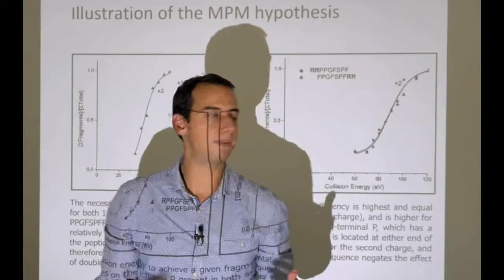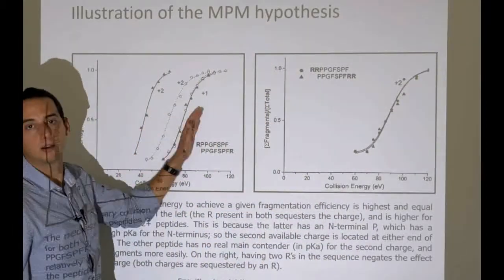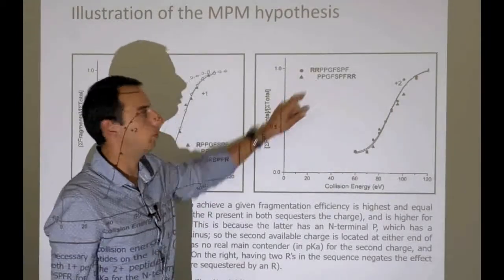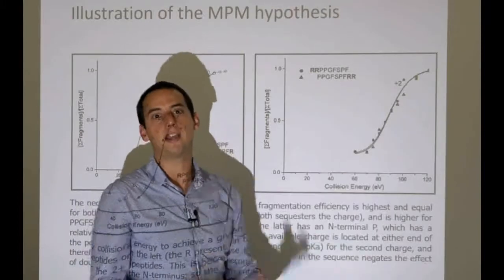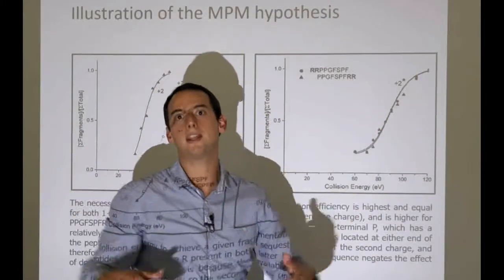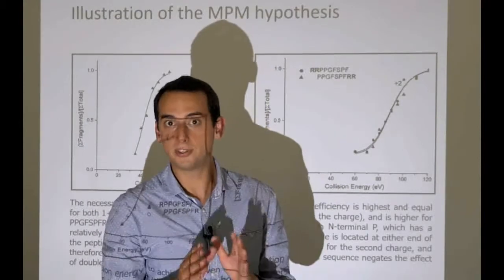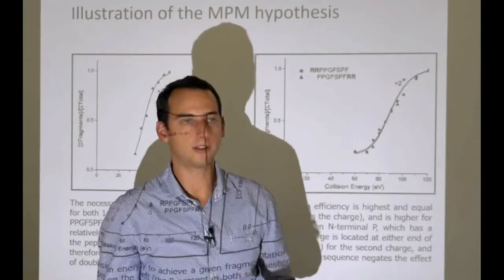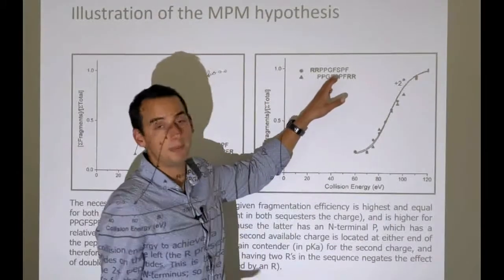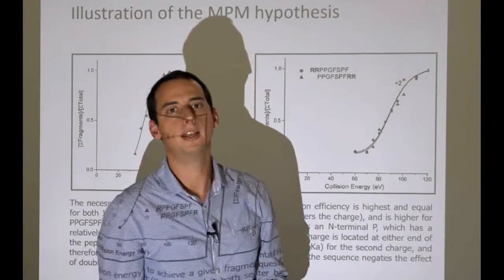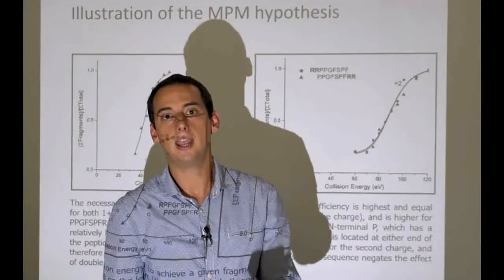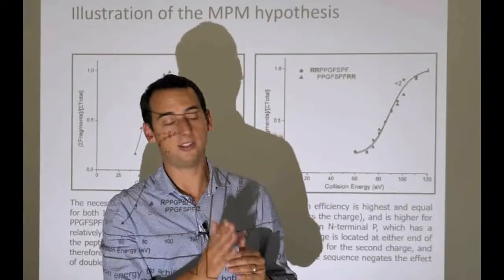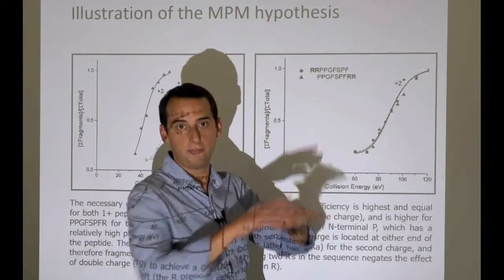The energy well in which the proton sits in arginine is much deeper—100 times deeper, 100 times more comfortable. It's easier to dislodge that proton from lysine, so these peptides tend to fly apart a little more easily and comprehensively. You can notice strange patterns when you have an internal lysine, a missed cleavage, or an internal arginine.